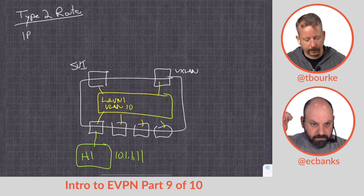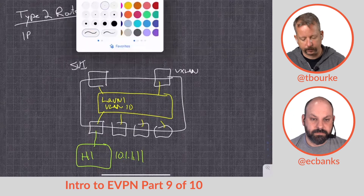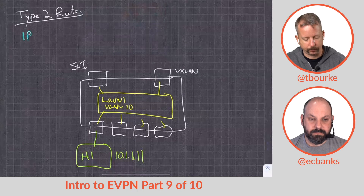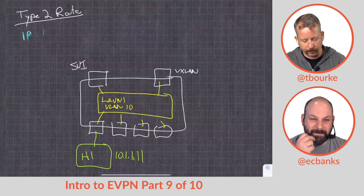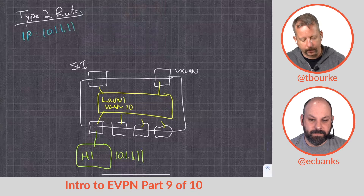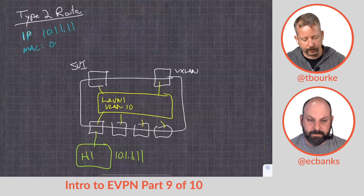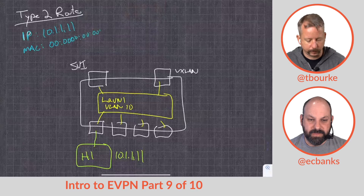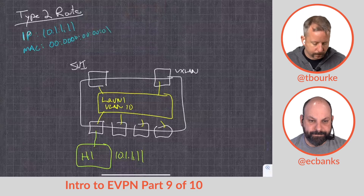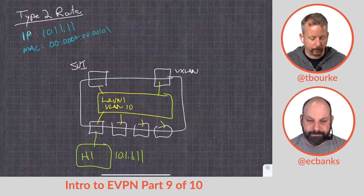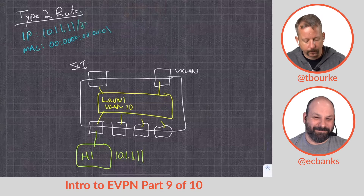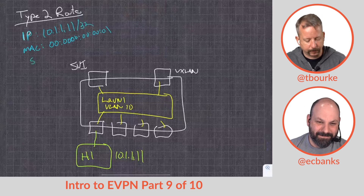The Type 2 route — in blue for Layer 3 things — will have an IP address of 10.1.1.11 and a MAC address of 00:00:00:00:01 (I don't want to write the whole thing). It's also going to have a sequence number.